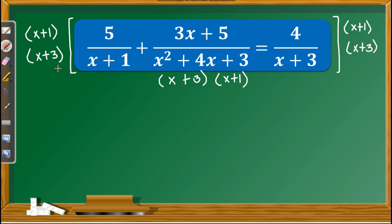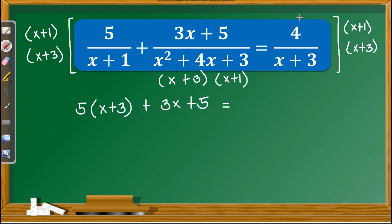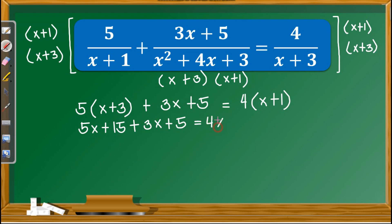Now let us eliminate the denominators. Multiplying the LCD by the first term removes x plus 1, leaving 5 times x plus 3. For the second term, multiplying the LCD cancels both x plus 3 and x plus 1, leaving 3x plus 5. On the right side, multiplying gives 4 times x plus 1. Next, let us simplify. Distributing 5 gives 5x plus 15, and we copy 3x plus 5. The product on the right is 4x plus 4.